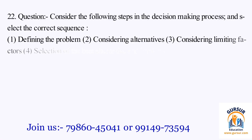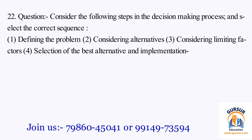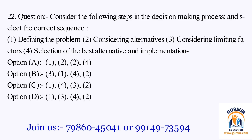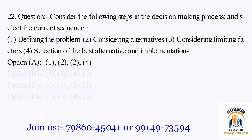Question number 22. Consider the following steps in the decision-making process and select the correct sequence: 1. Defining the problem, 2. Considering alternatives, 3. Considering limiting factors, 4. Selection of the best alternative and implementation. Option A: 1,2,2,4. Option B: 3,1,4,2. Option C: 1,4,3,2. Option D: 1,3,4,2. The right answer is Option A, that is 1,2,2,4.